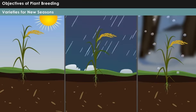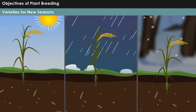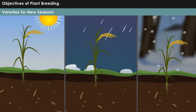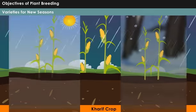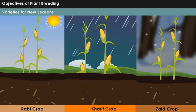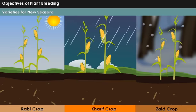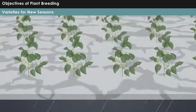Varieties for new seasons: Growing of plants in different seasons other than the traditional season is feasible through plant breeding. For example, maize is a Kharif crop, but scientists have made it possible to grow it as Rabi and Zaid crops.